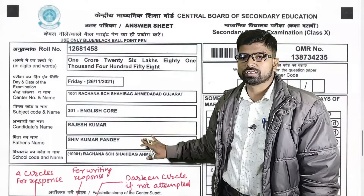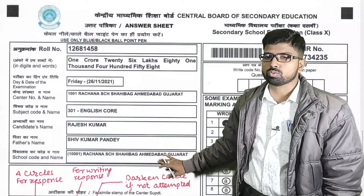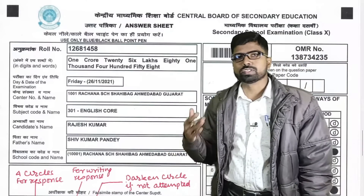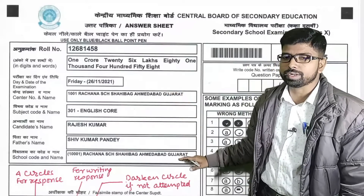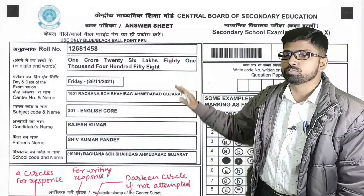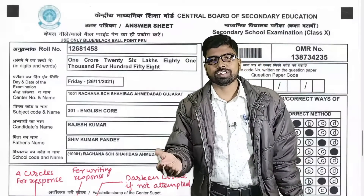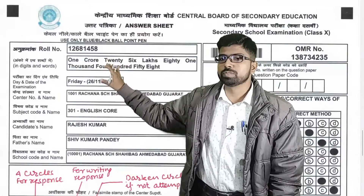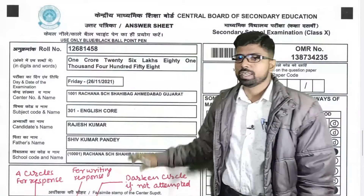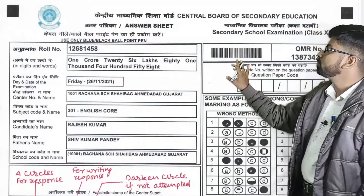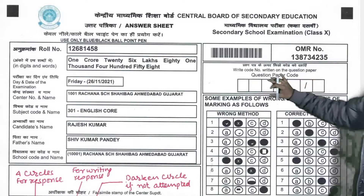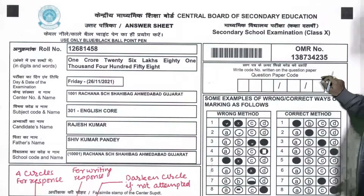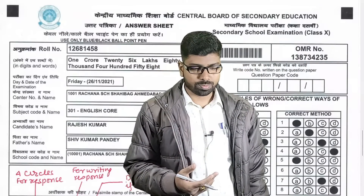Father's name, school name, and school code will also be pre-printed. If your examination center is in your own school, then the school name and center name will be the same; if they are different, they will differ accordingly. There will also be a barcode and an OMR sheet number.